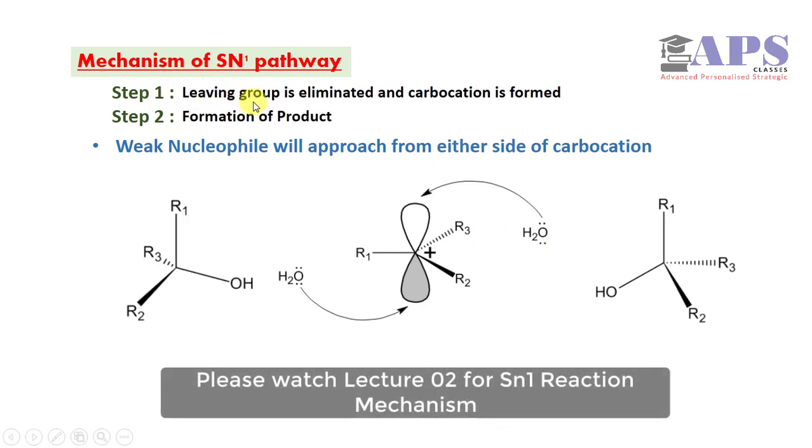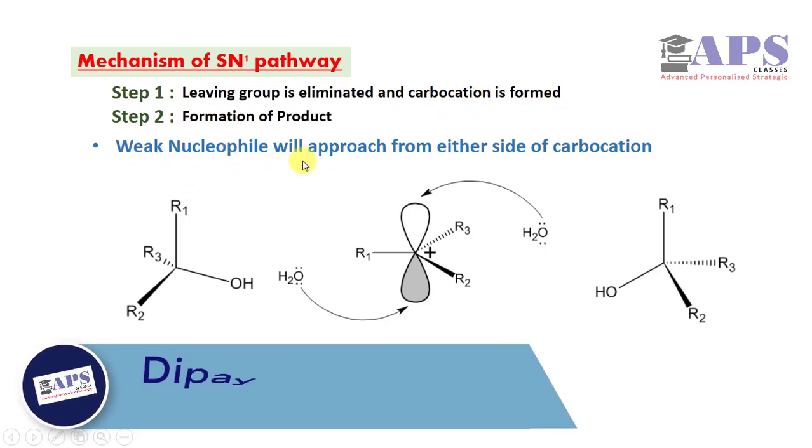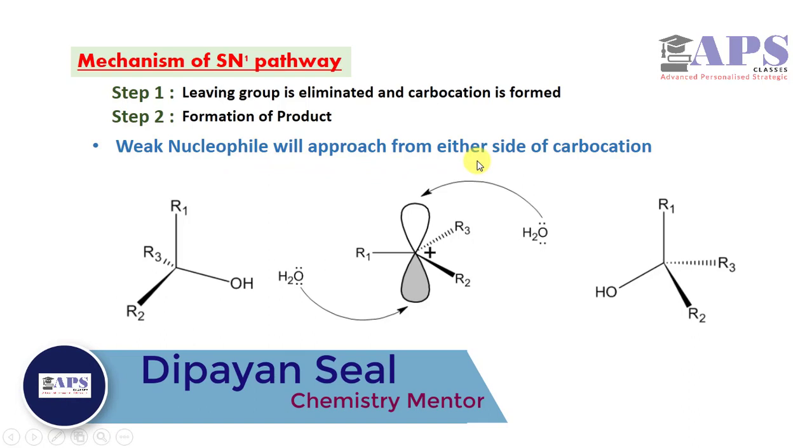In step 1, leaving group is eliminated and carbocation is formed. In step 2, weak nucleophile will approach this carbocation from either side to form the products.